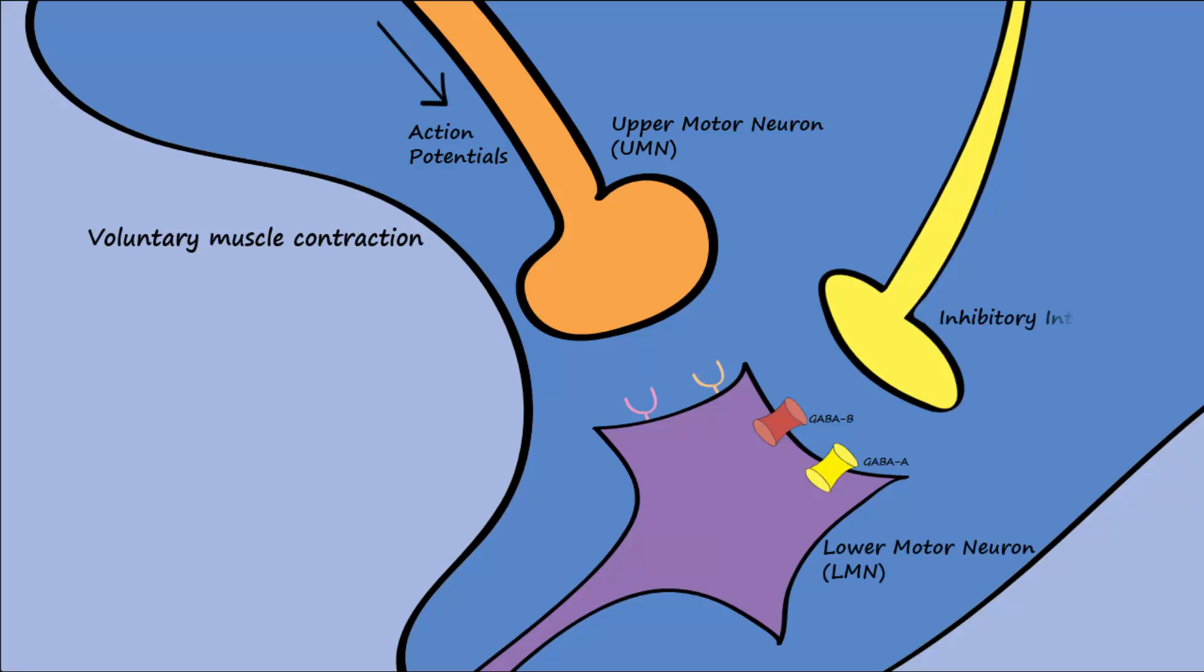Inhibitory interneurons regulate the excitation of the LMNs. An action potential traveling down the upper motor neuron will cause the release of excitatory neurotransmitters like norepinephrine or glutamate onto the LMN, which will then activate the skeletal muscle.